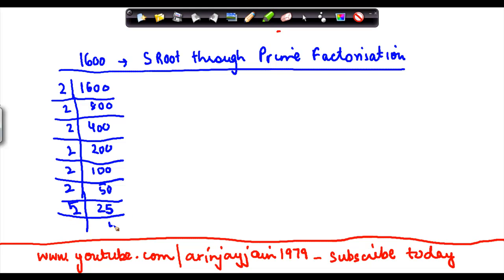Now, 25 can be divisible by 5. So again 5 here and 5 here. So 1600 can also be written as 2 into 2, so this is up to finding out the prime factorization.